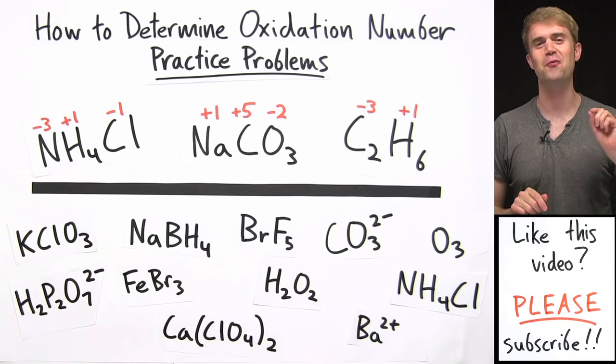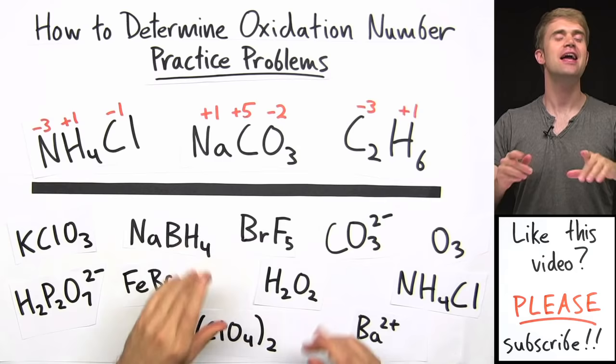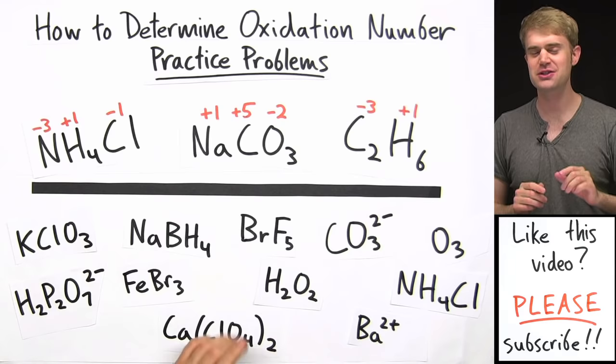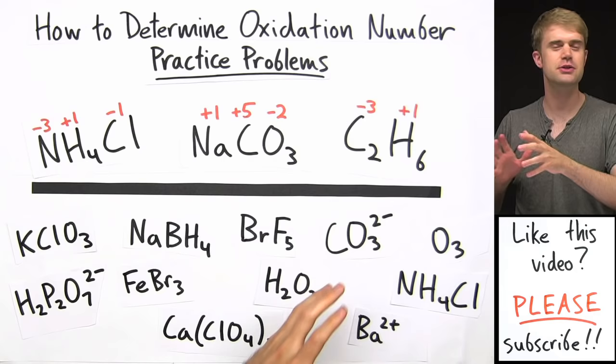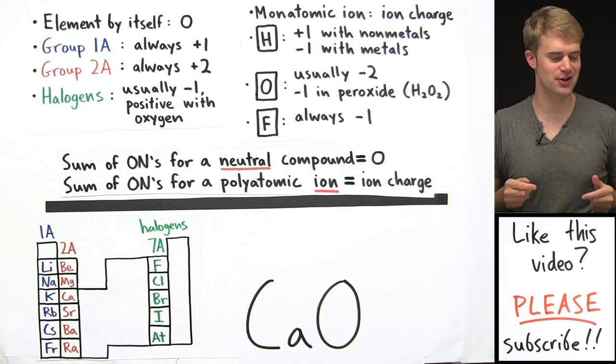In this video we are going to get really good at figuring out the oxidation numbers for elements in a chemical compound because we are going to do a ton of examples. We're going to start out with some examples that are pretty basic and straightforward and then we will go step by step into problems that are a little bit more challenging. These are the rules we'll use to figure out oxidation number and I have a periodic table here to help us out.